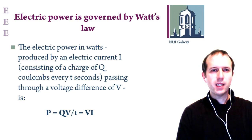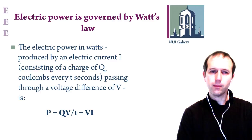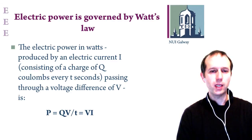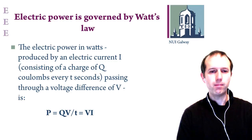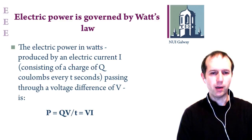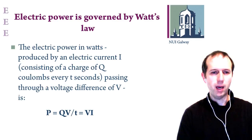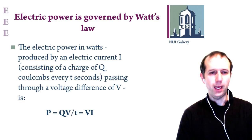In terms of electric power, we've seen the general definitions of power related to energy use over time, and that energy involves movement of charge through a voltage difference. Electric power in watts has a relationship to both voltage and current. Since current is the amount of charge being moved around a circuit per unit time, current and voltage together define power. Power is equal to V times I — that is Watt's law.